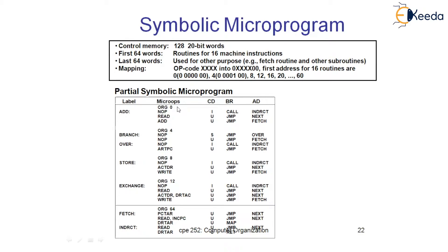For a micro program, we require four micro instructions — at locations 0, 1, 2, and 3 — which hold the four micro instructions for the addition operation. When the addition instruction is fetched, it is immediately mapped to the zeroth address because from the zeroth address, the addition micro program has been extracted.